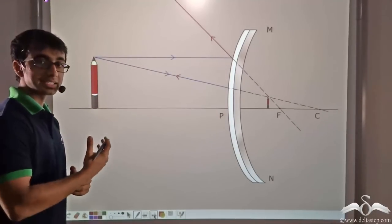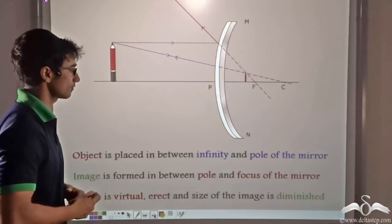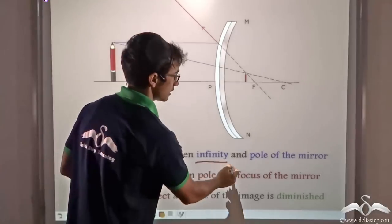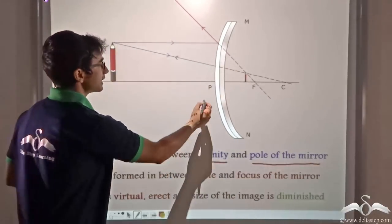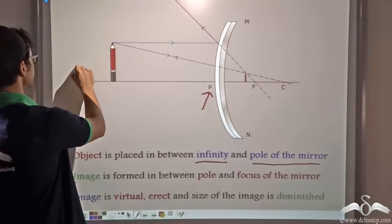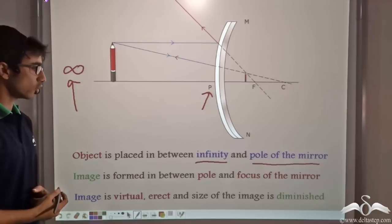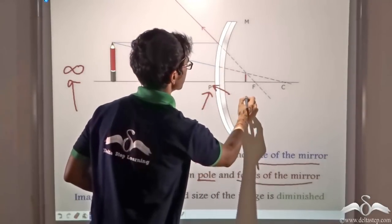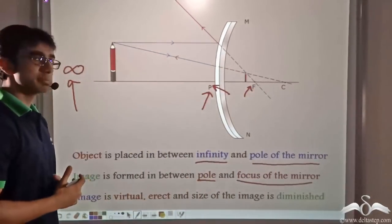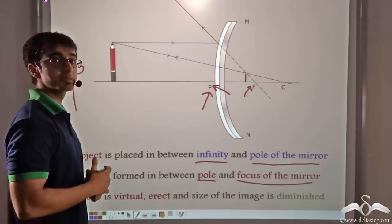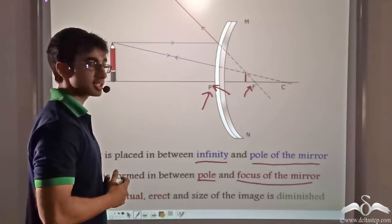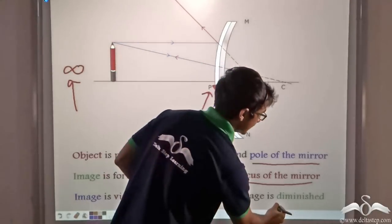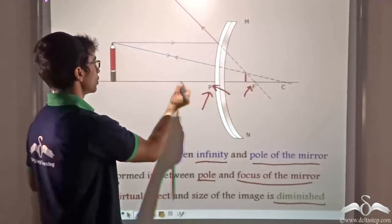Let us find out the characteristics of this image. When the object is placed anywhere between infinity and the pole of the mirror, the image formed is always between the pole and the focus of the convex mirror. The image is virtual, as it is formed on the other side of the convex mirror. The image is erect, and the size of the image is diminished — that is, the image is smaller than the object.